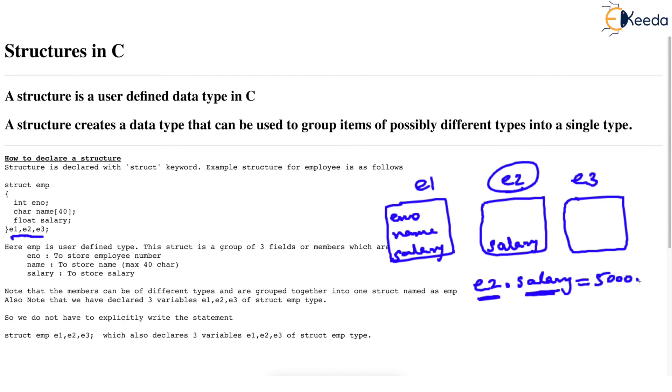and then which member you are trying to access. Maybe you want this member to become 50,000. So salary field over here will store 50,000.